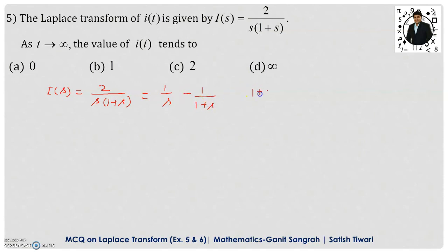Now if I do the cross multiplication, this will be 1 plus s minus s in the numerator upon s into 1 plus s. Here s and s get cancelled. We are left with 1 but we require 2 in the numerator. So I multiply by 2 here in the numerator and here also by 2. Now you just take the cross multiplication.